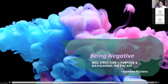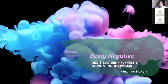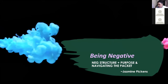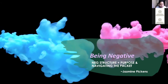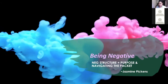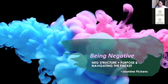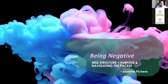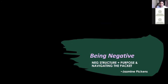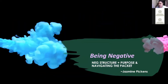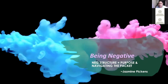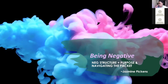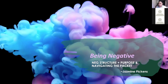We're going to talk today about being negative, and it's going to have two components. The first component is the negative structure — what being negative is, what things you should be thinking about in that role — and then I'm going to connect that to the packet, the JV varsity packet, which is the Abolish ICE affirmative.